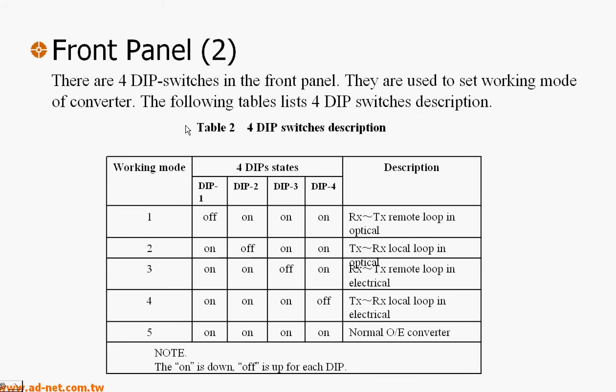On the front panel, you can see there are DIP switches which you can set up for different loopbacks. You can set up the RX-TX remote loop in optical side, you can set up the RX-RX loop in optical side and as well as you can set two different loopbacks at electrical side. The normal operation of the unit, you can see working mode 5, where all DIP switches are on. Later, we will show you the picture of the unit and you can see how it looks like.